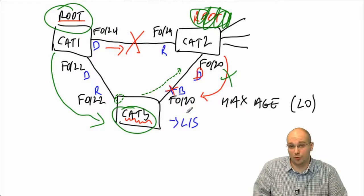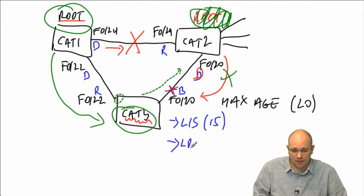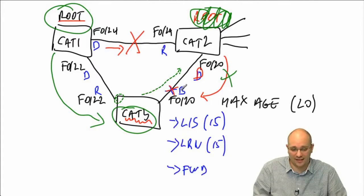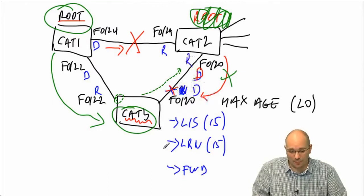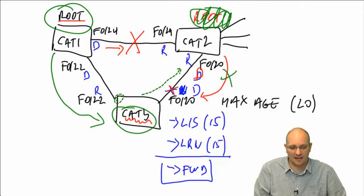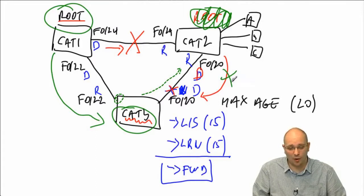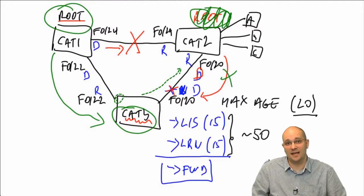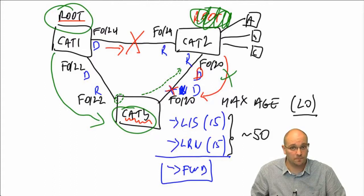But this port — FastEthernet 20 on cat3 — is still in the listening phase and is going to remain there for 15 seconds. After that, we move into the learning phase for another 15 seconds, and only after that do we move into the forwarding state. All during this time, until this port transitions into the forwarding state, hosts behind cat2 are effectively cut off from the network — for about 20 seconds plus 30 seconds, meaning around 50 seconds of no communication.